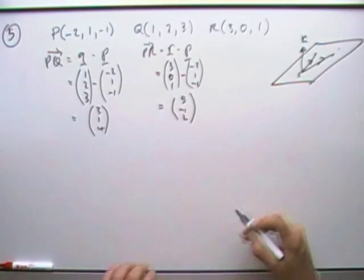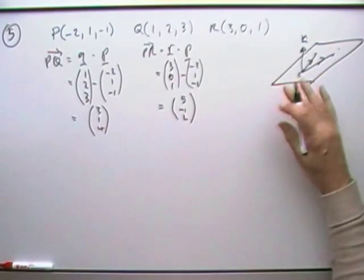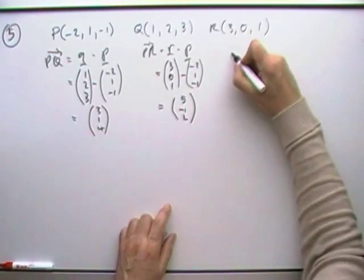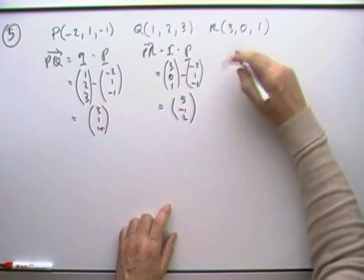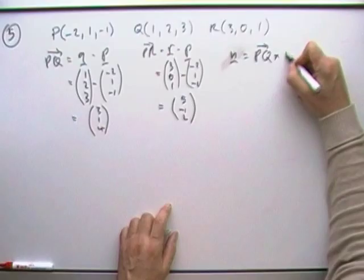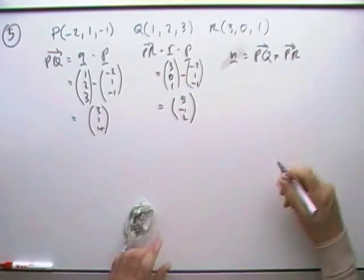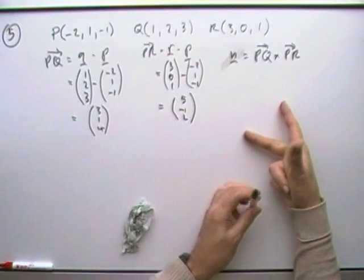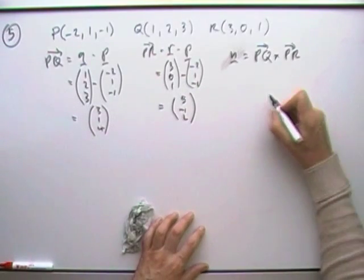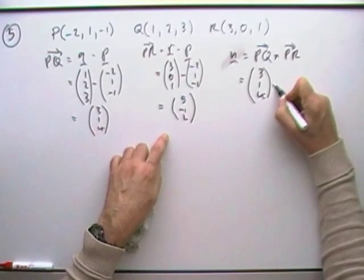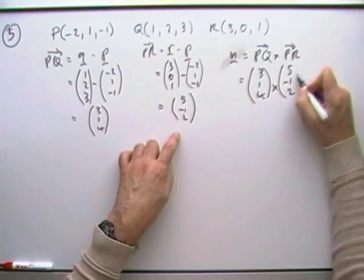Then I'll get the cross product of them. I'll put this just over here to save some space. So now I'm going to work out N, which will be the cross product of the two vectors, because the cross product will produce a vector at right angles to them both. At right angles to lines on the plane, it gives you a normal straight off the plane. So I'm going to work out (3, 1, 4) cross (5, -1, 2).